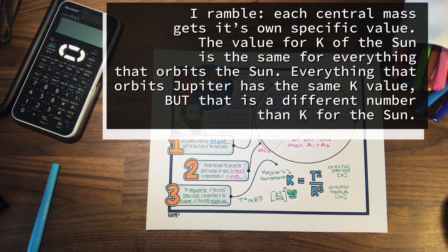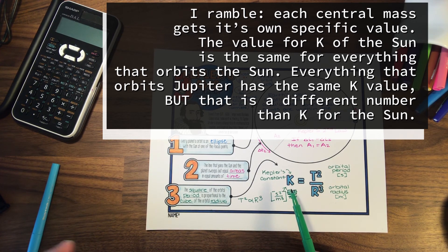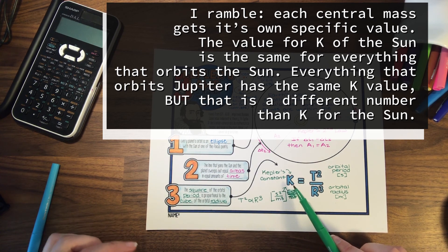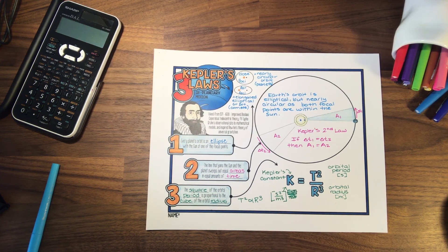You can also find Kepler's constant for other central objects. For example, Kepler's constant for Earth will have a different value than that of the Sun. You can find Kepler's constant for Jupiter using all of Jupiter's moons, and you'll get the same value each time for objects orbiting Jupiter. But the constant values for the Sun, Jupiter, and Earth will all be different. We'll explore that in the next video.